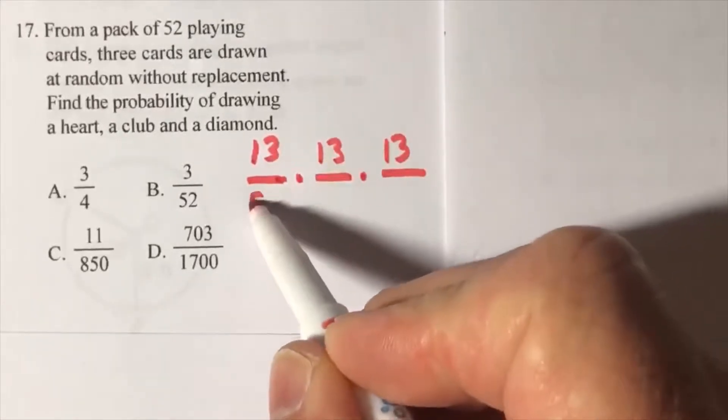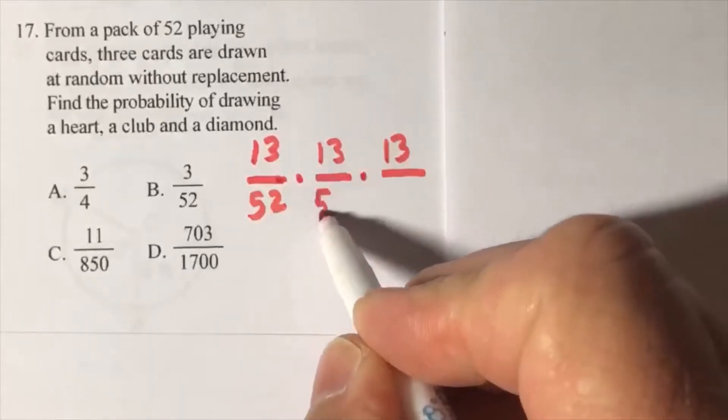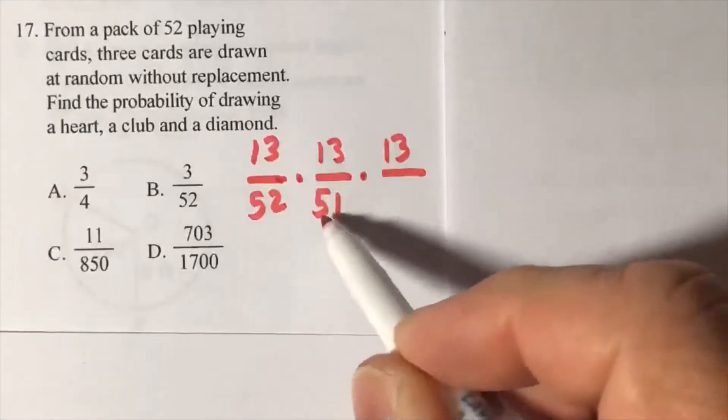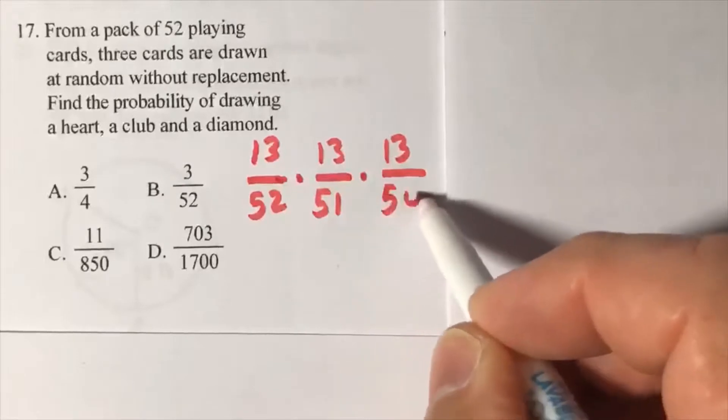There's 52. Without replacement, so when I go to the next drawing I subtract. When I go to the next drawing I subtract from the total because I don't put it back in. All right, so this is the setup.